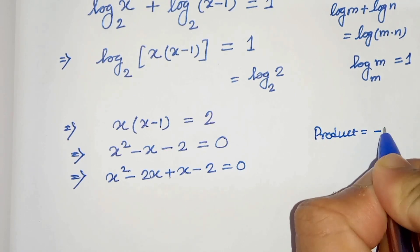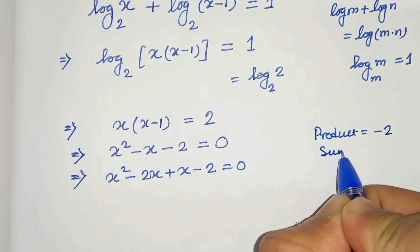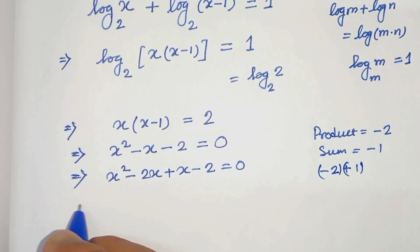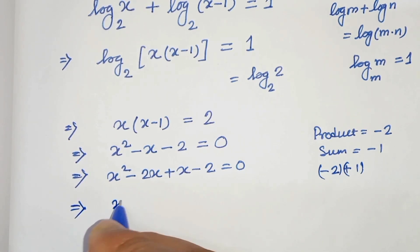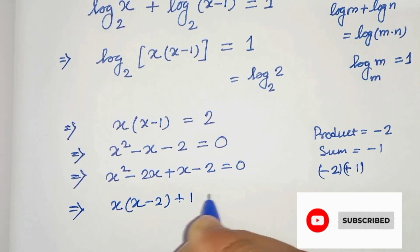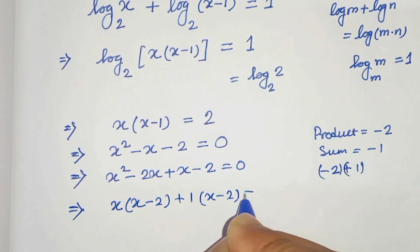So we have chosen minus 2 plus 1. In the next step we can take common x minus 2, so x minus 2 times x plus 1 equals to 0.